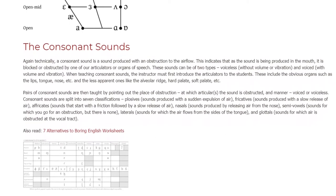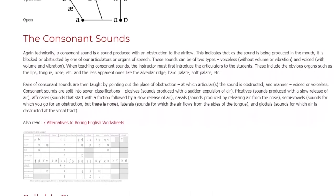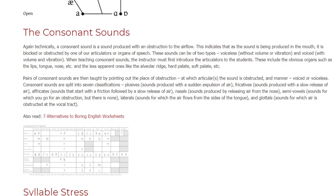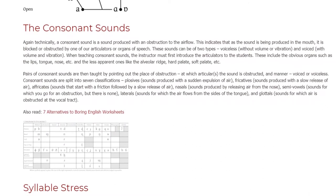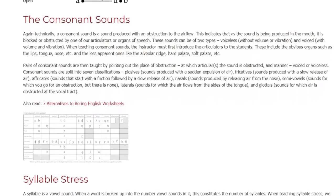Pairs of consonant sounds are then taught by pointing out the place of obstruction - at which articulators the sound is obstructed - and manner: voiced or voiceless. Consonant sounds are split into seven classifications.